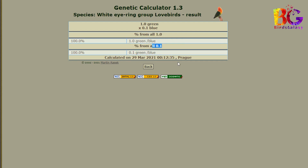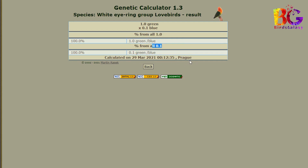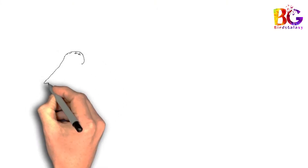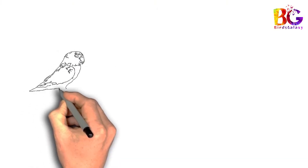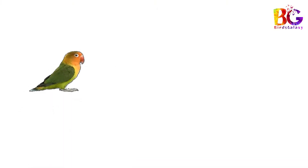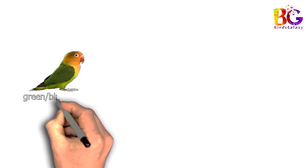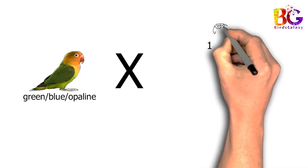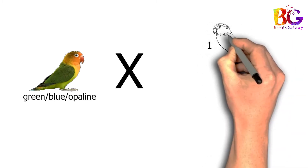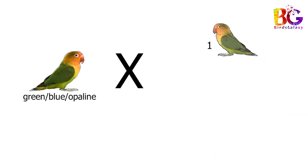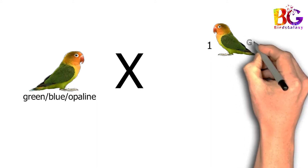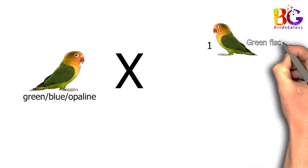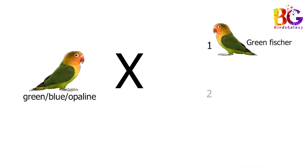Now I will use one male with three different females. First we will make the pair and then check what the offspring results are. In this pairing we used green split opaline split blue with three different females: green fisher, blue fisher, and par blue fisher.